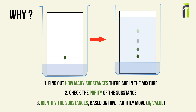The third reason is to identify the substances. We don't just want to see that these substances exist — we want to find out what they are. This is based on how far they move relative to how far the solvent moves, which is indicated by a value known as the RF, or retardation factor value.